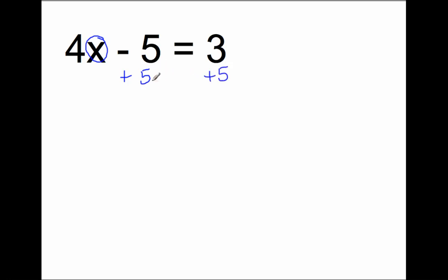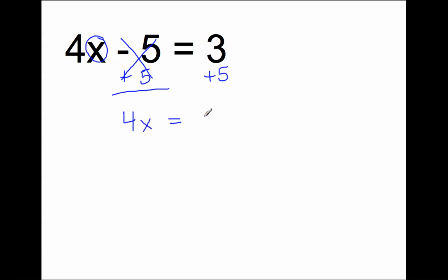I'm going to do it the long way first and then show you the shorter way, so you have a mathematical sense of why the short way works. These will cancel out because of the inverse property of addition — when you add a number to its opposite, you make 0. 4x plus 0 gives me 4x because of the identity property of addition. So 4x is left on this side, equals 3 plus 5. 3 plus 5 is 8. So I now have 4x equals 8.